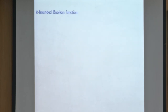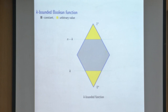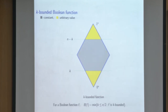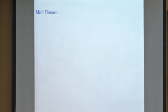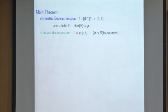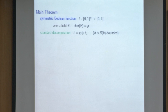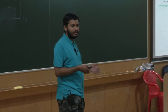Functions that are constant on weights k to n−k and arbitrary on the periphery are called k-bounded functions. We denote by b(f) the smallest k such that f is k-bounded. We are particularly interested in b(h), where h comes from the standard decomposition of f. For a symmetric Boolean function f over a field with characteristic p, the standard decomposition gives h that is b(h)-bounded but not k-bounded for any smaller k.